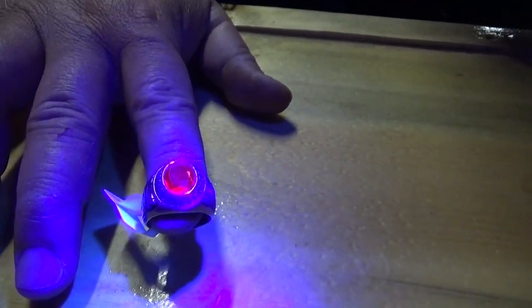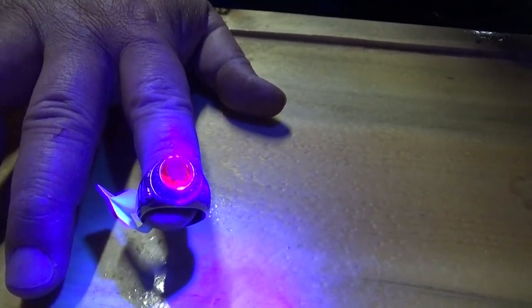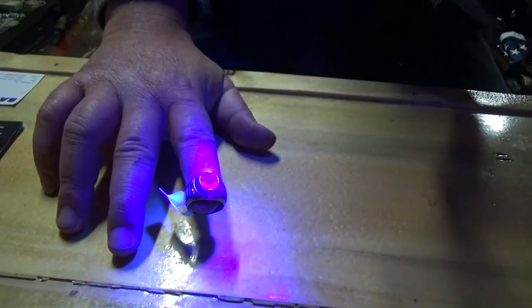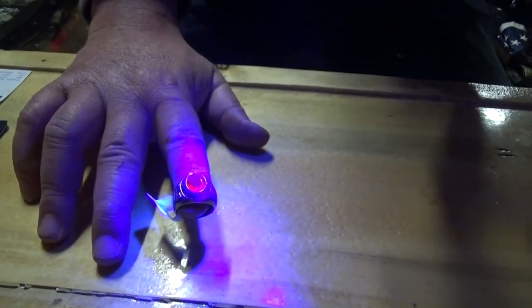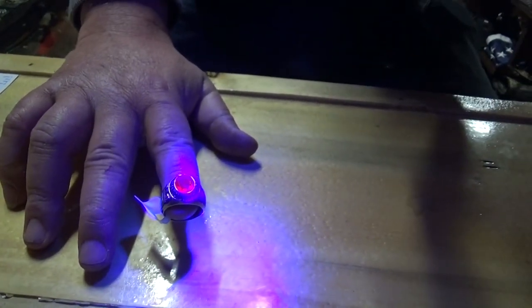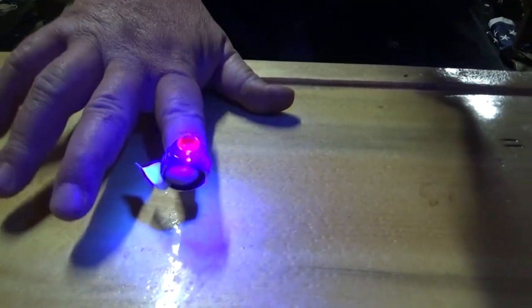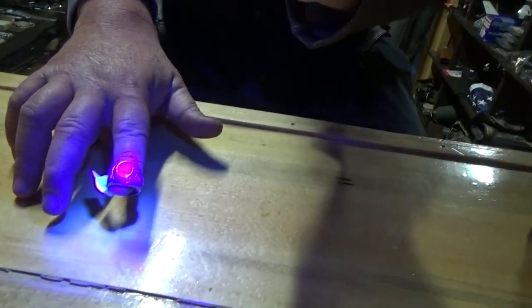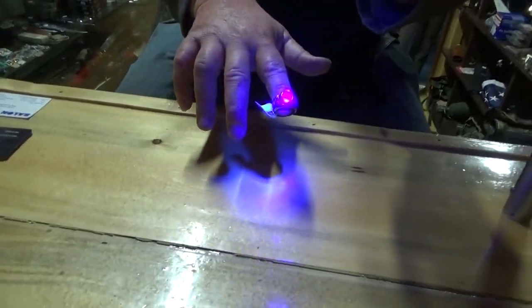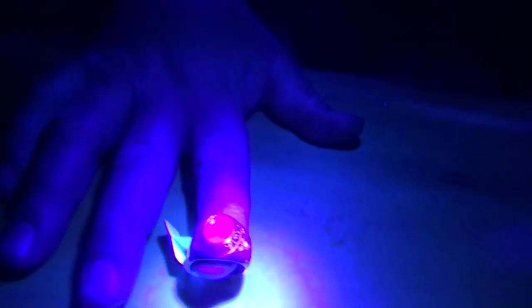Can you see the fluorescence? It looks like a dragon's eye. Garnets and glass will not do that. We're going to turn off the light here in a second. Can you see how that shines? It's like a dragon's eye.